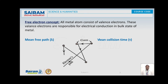So this is what the free electron concept is about. Looking at electron movement, electrons keep moving within the boundaries of the metal and collide with each other and also with the lattice points. Based on this, let us concentrate on what is mean free path lambda. Mean free path lambda is the average distance traveled by the electrons between successive collisions with the lattice points.